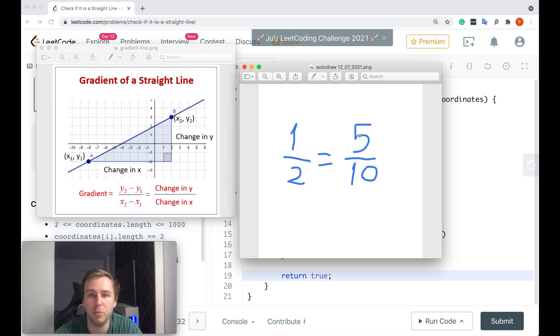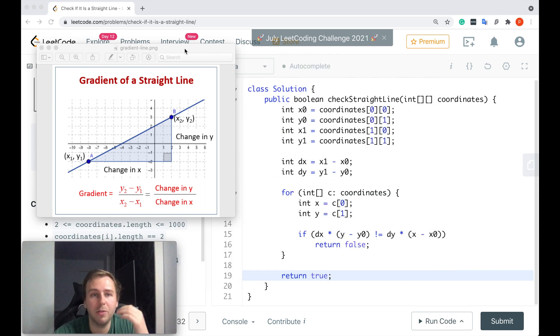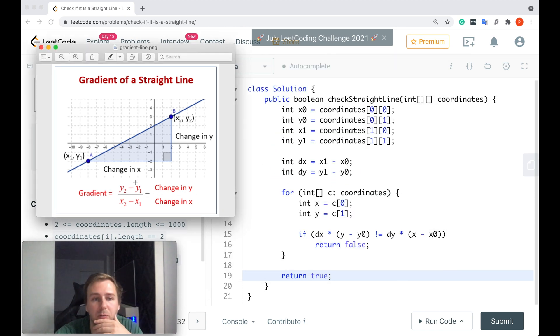And division would cause us a lot of problems as well. That's why we just multiply this stuff with this stuff and compare if it's the same. In case it's not the same, we would return false. Otherwise we would iterate through all of the coordinates, and if we would not return false, we would return true in the end, which will mean that the given line is a straight line.